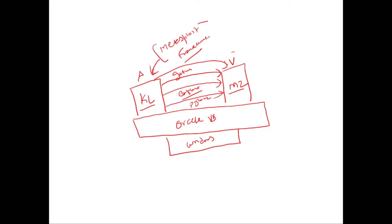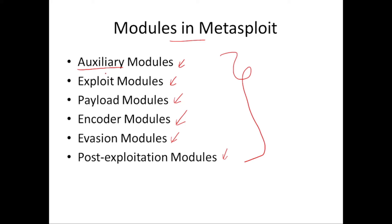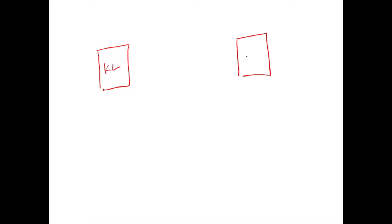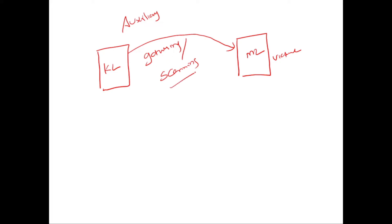Now let's take a look at the modules and what each one does. The first module is the auxiliary module. As I described, we have Kali Linux as the attacker and Metasploitable 2 as the victim. Auxiliary modules in Metasploit can be used for gathering information or for scanning. We scan the victim to look for open ports and vulnerabilities existing on the victim machine.